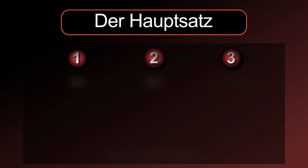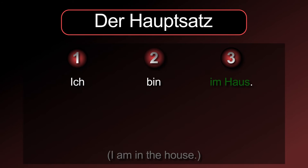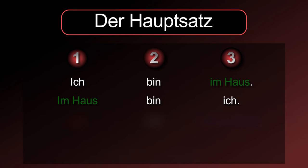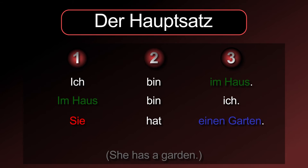For example: Ich bin im Haus. Since only the verb is required to be on position 2, you can also exchange the content of position 1 and 3: Im Haus bin ich. Sie hat einen Garten. Einen Garten hat sie.